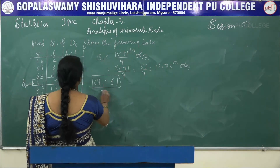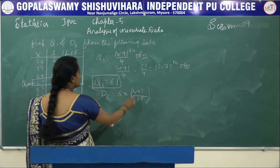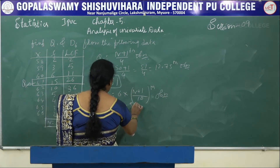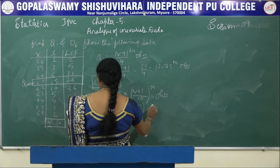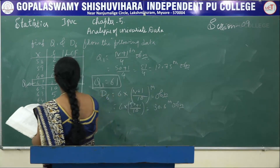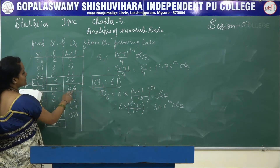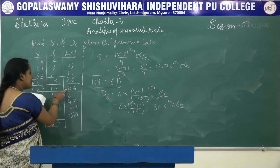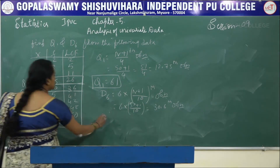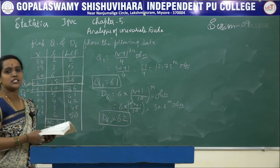To find D6, it is 6×(n+1)/10 = 6×51/10 = 30.6th observation. 30.6 falls in the LCF value of 36, and the corresponding X column value is 62. So D6 = 62.